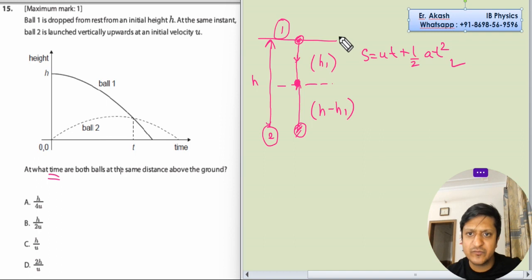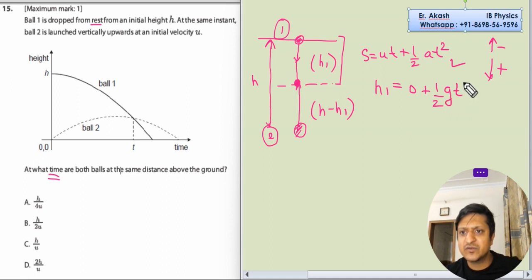So h1 is equal to h1 is equal to - and the notation for downwards is positive and for upwards is negative. The initial velocity is zero because we have dropped from rest, so this component will be zero plus half g t square. g is positive because it's downward. h1 equals half g t square. Now we will do the similar thing for lower one.